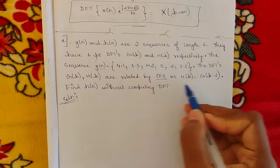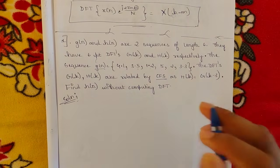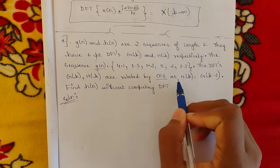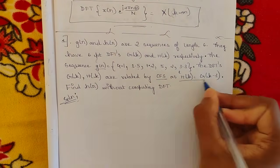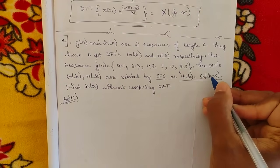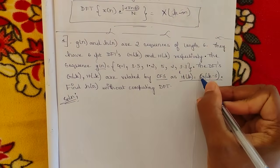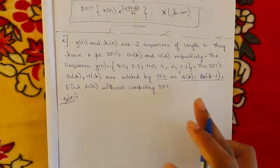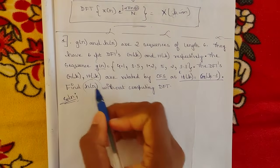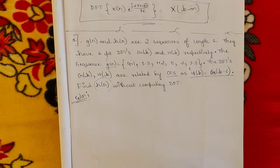The DFTs G(k) and H(k) are related by the circular frequency shift (CFS). Sometimes the question won't mention it directly but will give you the relation. The relation given is: H(k) = G(k − 3), where m = 3. Since we have capital letters, this confirms we use circular frequency shifting to solve it.